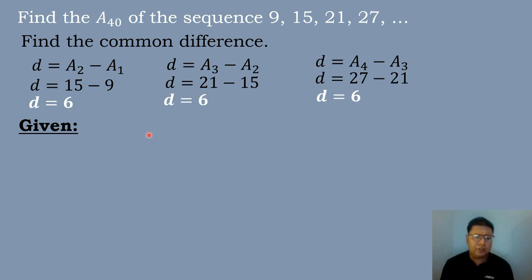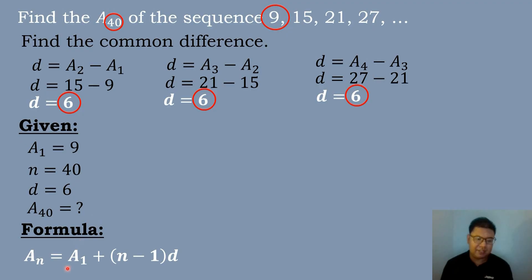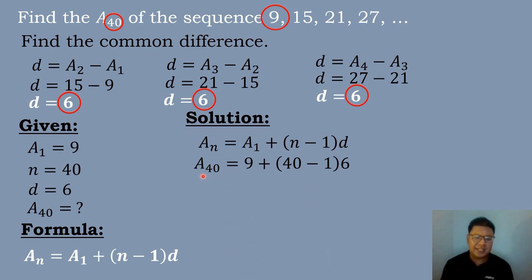The next step is to identify the given. We have a sub 1, the first term, equal to 9; n is equal to 40; and the common difference is equal to 6. We need to find the value of a sub 40, the 40th term. Then we use the formula of the arithmetic sequence: a sub n is equal to a sub 1 plus the quantity n minus 1 times the common difference, and substitute.